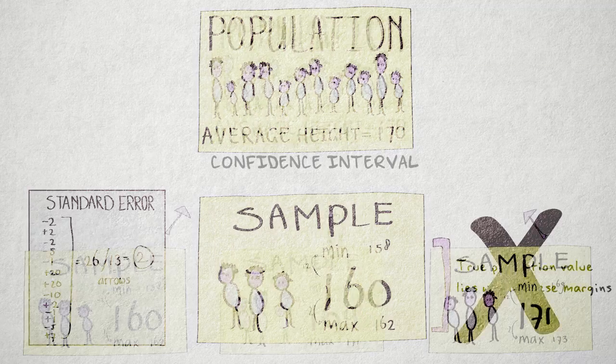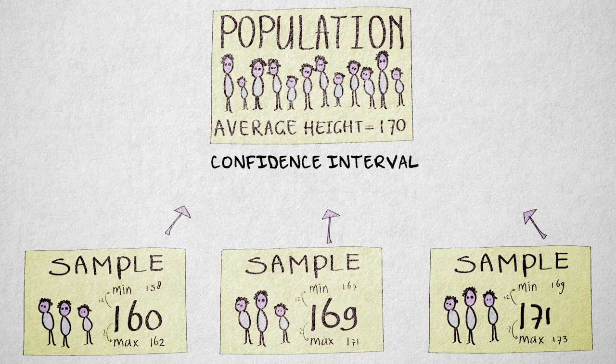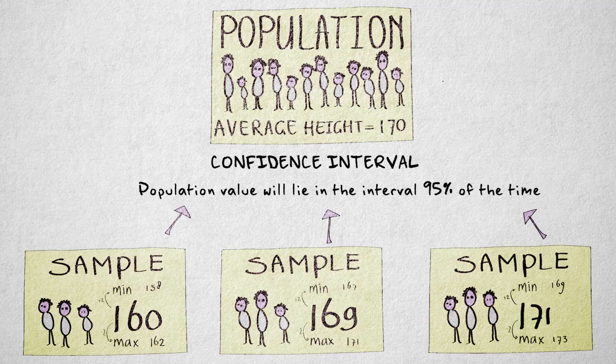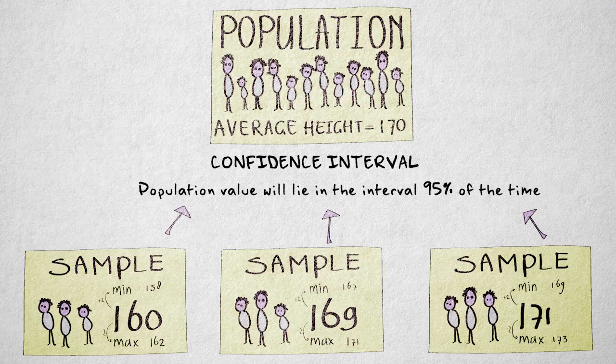This information is captured in a confidence interval. A confidence interval allows us to say that with repeated sampling, in a certain percentage of these samples, the true population value will differ from the sample value by no more than the margin of error.